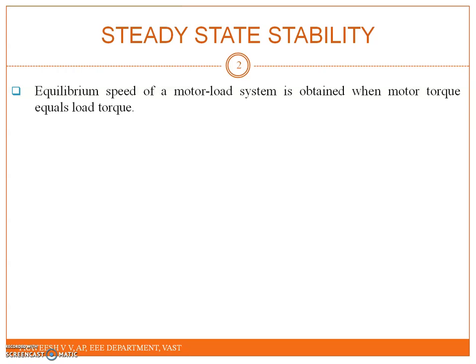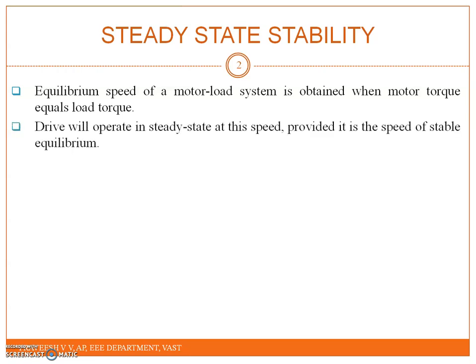Basically, an equilibrium speed of a motor-load system is obtained when the motor torque is equal to the load torque. The drive will operate in steady state at this speed, provided it is the speed of the stable equilibrium.